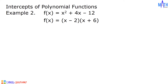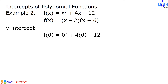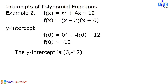Next, let us find the y-intercept. If we set x equals 0, then we have f of 0 equals 0 squared plus 4 times 0 minus 12. Since 0 squared is equal to 0, f of 0 is equal to negative 12. The y-intercept is 0, negative 12.